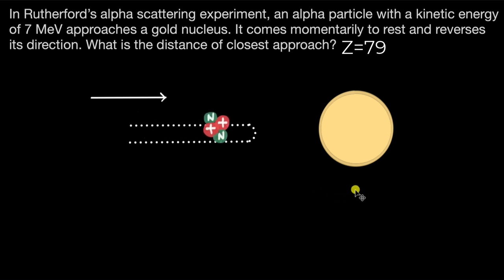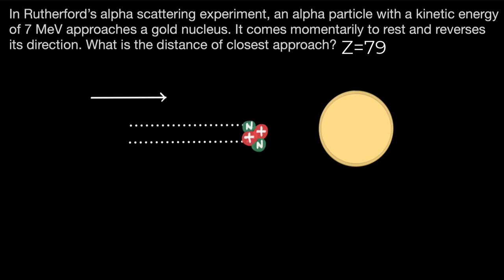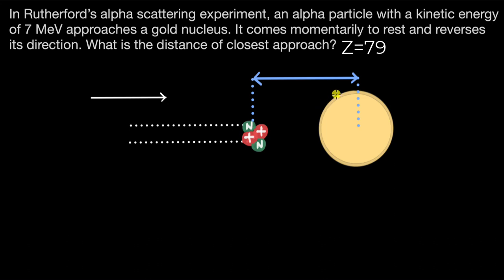That is, when the alpha particle is momentarily at rest, what is the distance? The distance between the two centers — the center of the gold nucleus and the center of the alpha particle nucleus, which has two neutrons and two protons. That distance between the centers of these two nuclei is what we need to figure out.